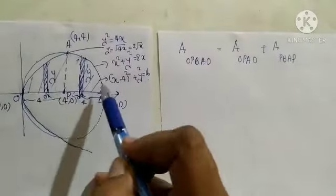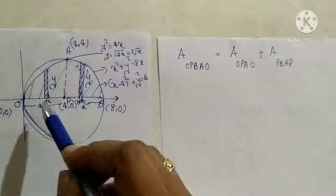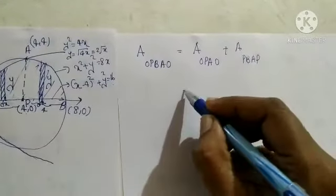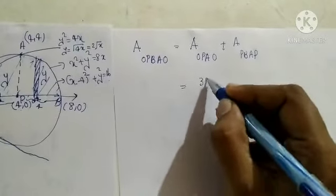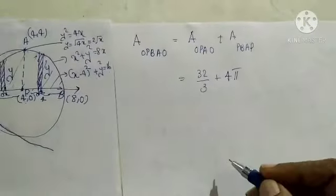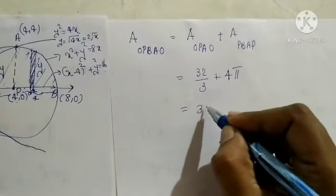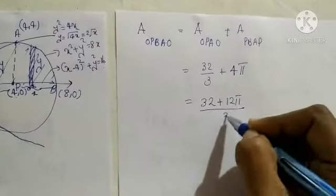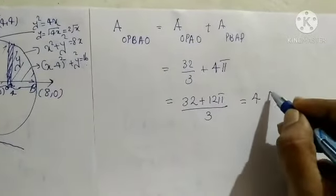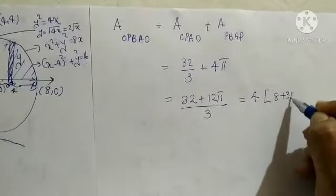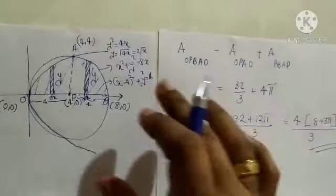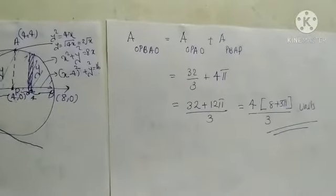The area of the whole shaded region equals area of OPAO plus area of PBAP, which is 32 by 3 plus 4 pi. Cross multiplying, this becomes 32 plus 12 pi divided by 3. Taking 4 outside from the numerator gives 4 times 8 plus 3 pi divided by 3 square units as the area of this whole shaded region. I hope you understood this question.